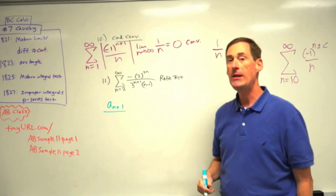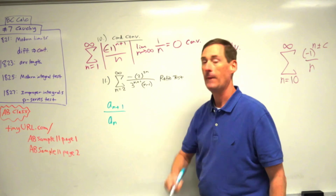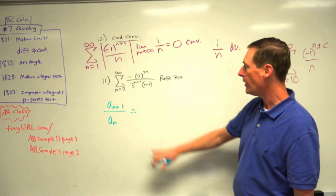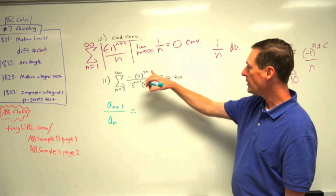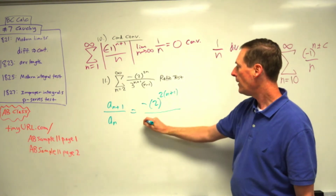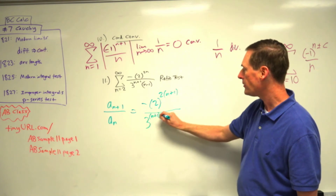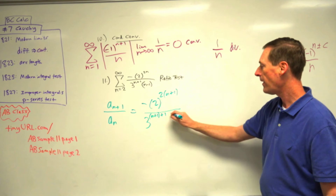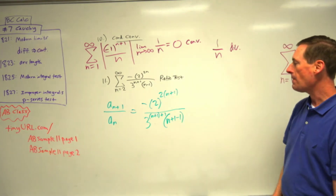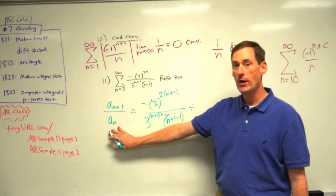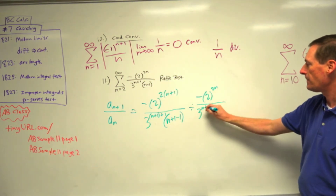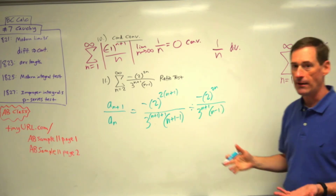Now let's go to the ratio test. The ratio test is about picking a sub n plus one over a sub n — the next term over the current term. The next term means changing all the n's into n plus ones: negative two to the two times (n plus one), over three to the (n plus one plus one), with n changed to n plus one but also with a minus one. Divided by the original formula — we hope a lot of stuff cancels. This is just a lot of algebra.